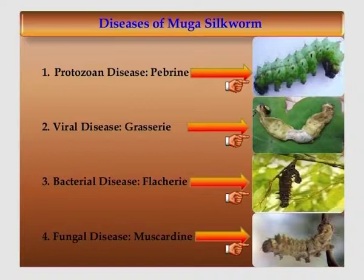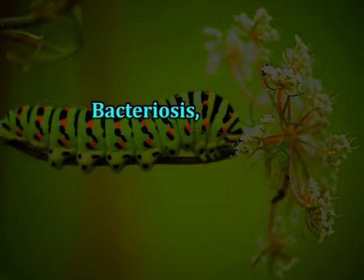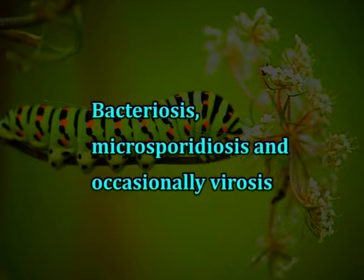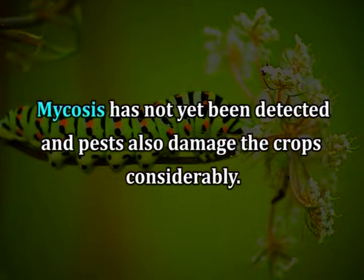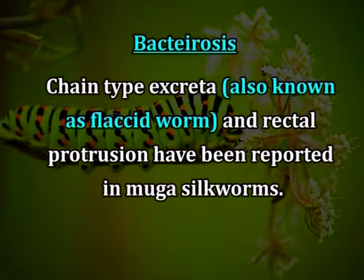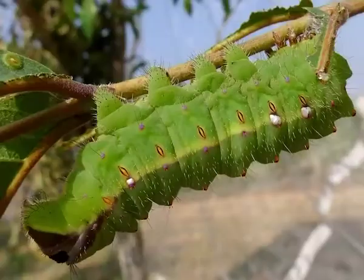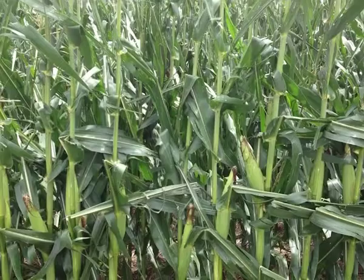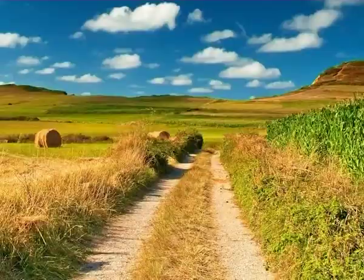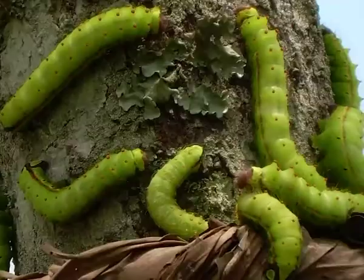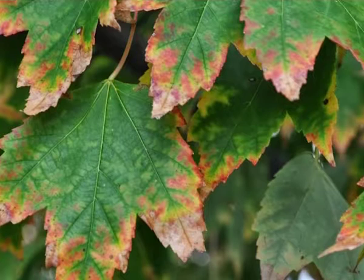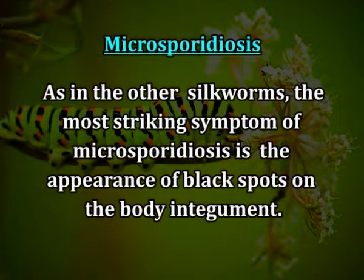Diseases and pests of muga silkworms: Muga silkworms are vulnerable mainly to three types of diseases, namely bacteriosis, microsporidiasis, and occasionally virosis. Mycosis has not yet been detected, and pests also damage the crop considerably. Bacteriosis, also known as chain-type excreta, flaccid worm, and rectal protrusion, has been reported in muga silkworm. The symptoms are virtually similar to those of Antheraea mylitta. Very little is known about the causative agent. The disease accounts for nearly 30 percent crop loss, with the highest incidence in the summer crop; late instar worms are more susceptible. Unsuitable leaves and overcrowding induce the disease.